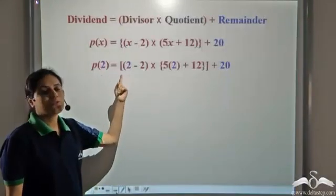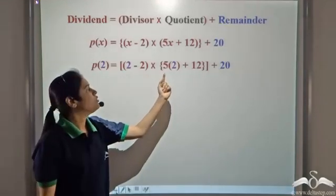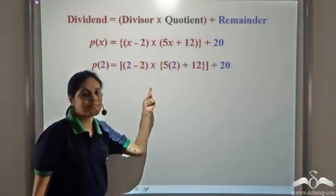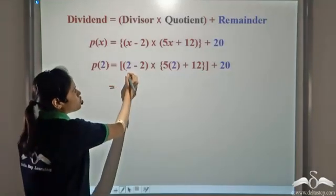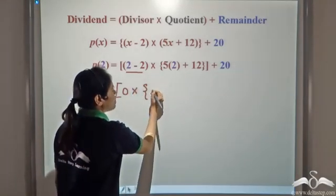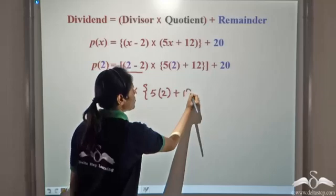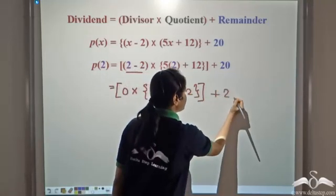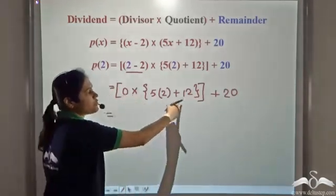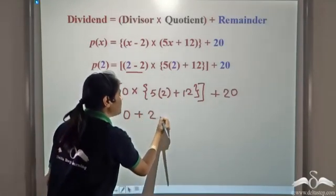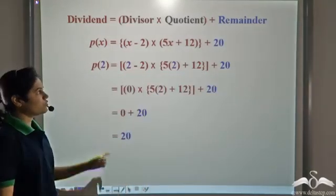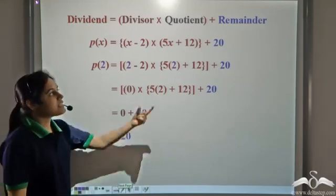We have P(2) is equal to 2 minus 2 into 5 into 2 plus 12, plus 20. We have substituted 2 in place of x on both sides. Now 2 minus 2 is 0, so we get 0 into 5 into 2 plus 12, plus 20. Zero into anything is 0, so we get 0 plus 20, which is 20. So P(2) gives us 20, which is the remainder of this division.